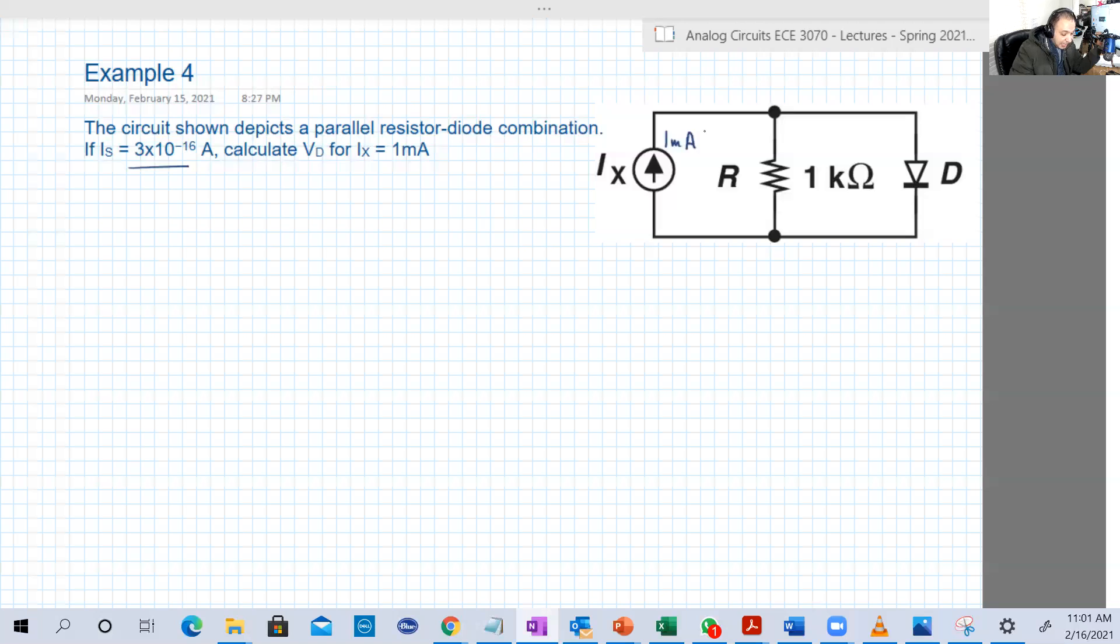The current source current Ix will be divided into IR and ID. Here is a voltage Vd from N to V. It is the same as the resistor voltage because they are in parallel, and also the Ix current source voltage as well.